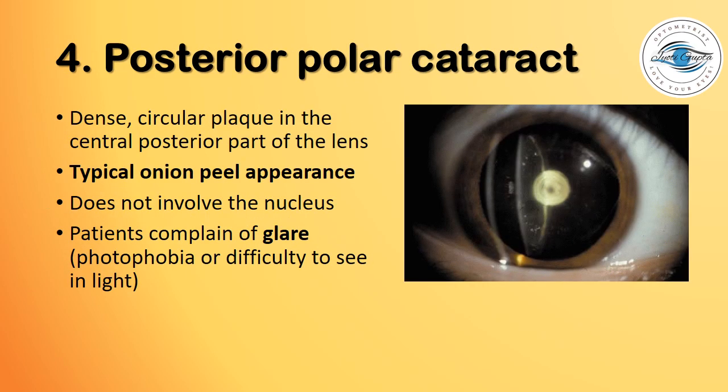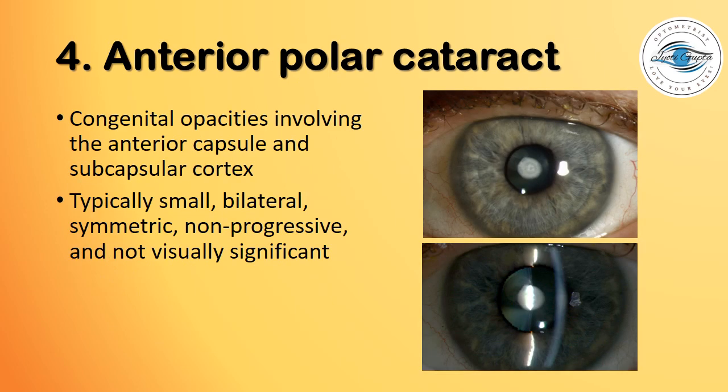Posterior polar cataract features dense, circular, block-like opacities formed in the central posterior part of the lens, typically presenting with an onion-peel appearance as seen in this photograph, and does not involve the nucleus. Patients usually complain about glare, i.e., photophobia, or difficulty seeing in bright light.